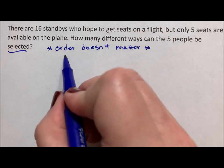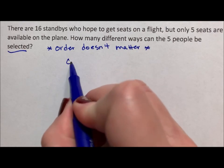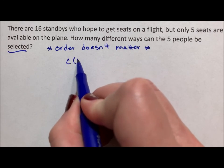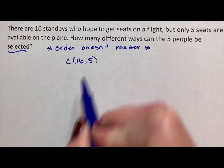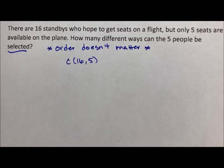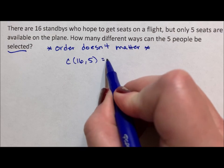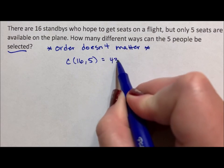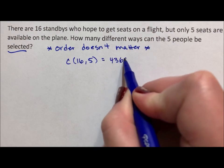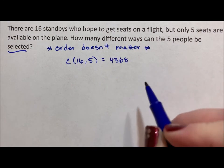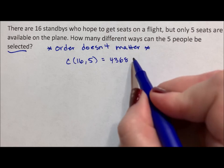So we're going to use a combination of the 16 people, five of them are selected. So a combination of 16, taking five at a time. We throw this into our calculator and we find out that there are 4,368 ways that you could be selected.